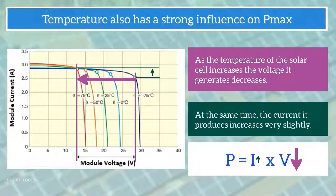Therefore, the net effect is an overall decrease in the power produced by the solar cell.